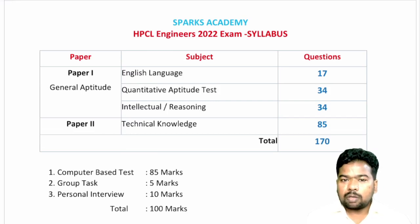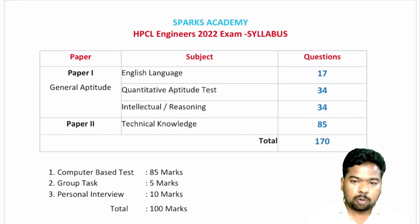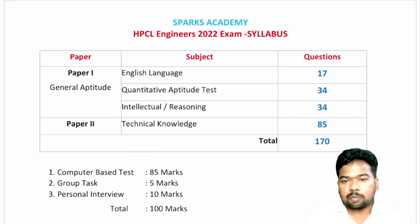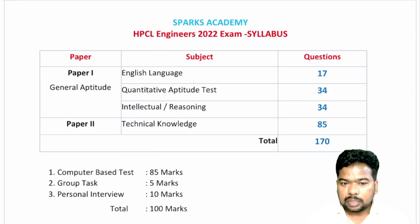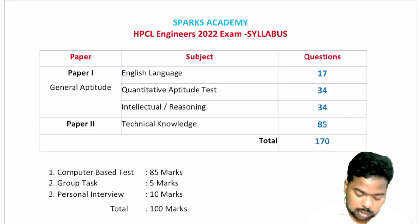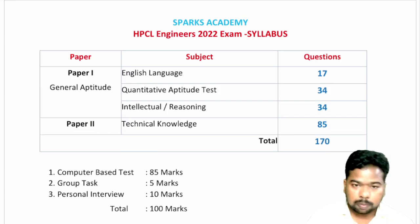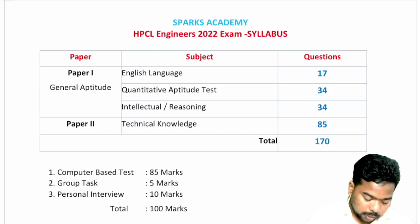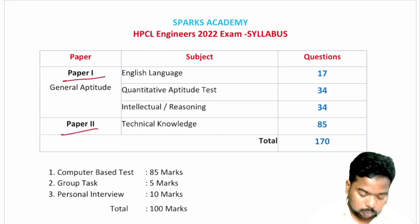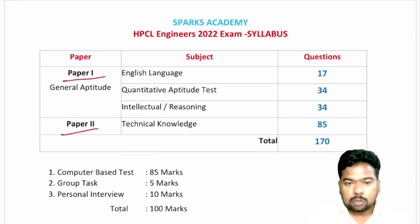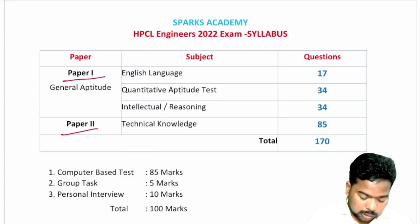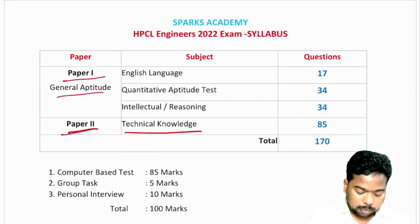Now let's look at the exam pattern. The exam is a computer-based test with two parts: Paper 1 and Paper 2. Paper 1 is General Aptitude and Paper 2 is Technical Knowledge.